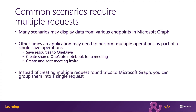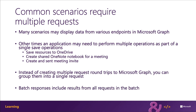One way to avoid any issues is to introduce an optimization and that is to group multiple requests into a single request to Microsoft Graph. This support, which we call batching, instructs Microsoft Graph to execute multiple requests and return the group results for each request in a single response.